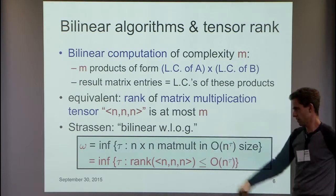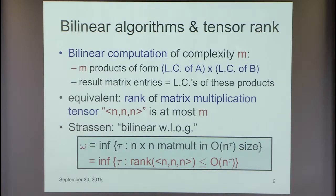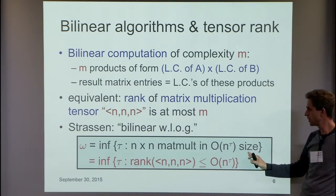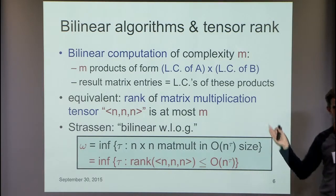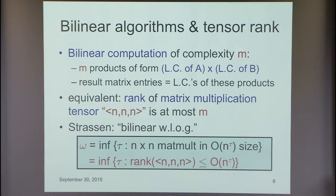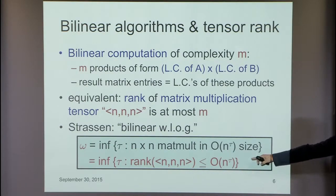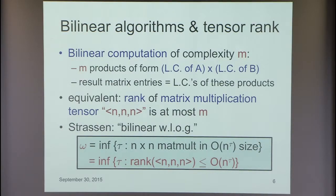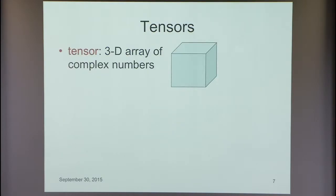The nice thing about this particular problem is that Strassen showed a long time ago you can assume bilinearity without loss of generality. If you define Ω to be the smallest exponent such that you have an arithmetic circuit computing n by n matrix multiplication in about n^Ω time, that's the same number as you get considering only bilinear computations—equivalently, the rank of the matrix multiplication tensor. That's why it's become a very appealing problem from a mathematical perspective.